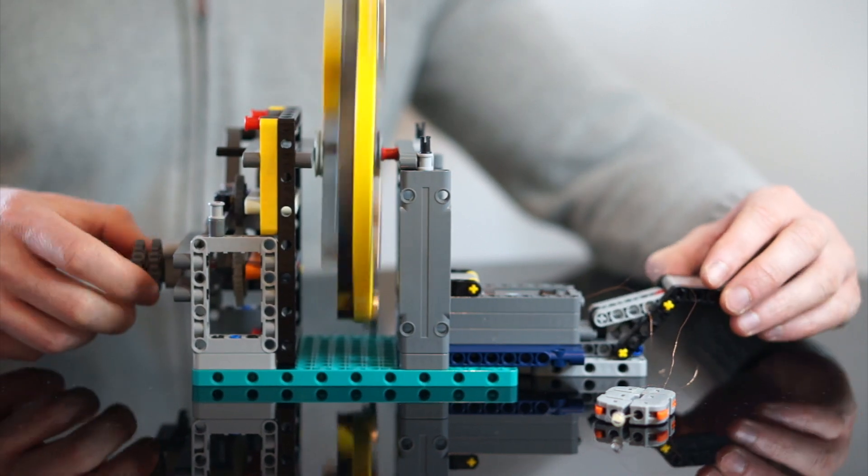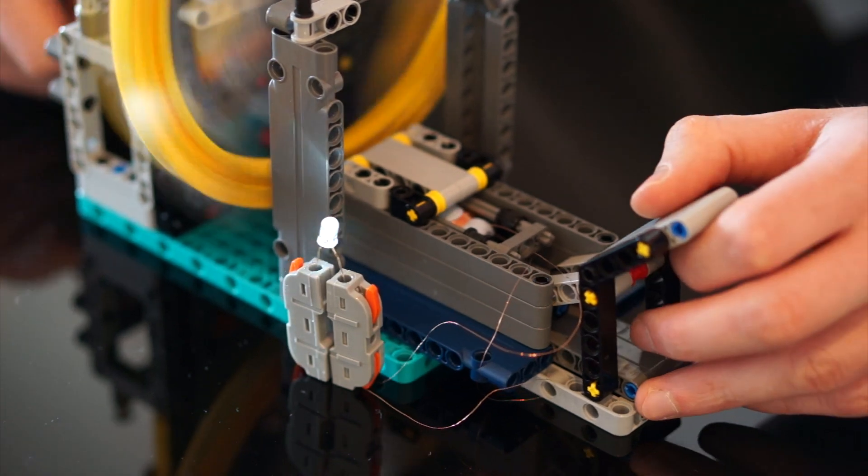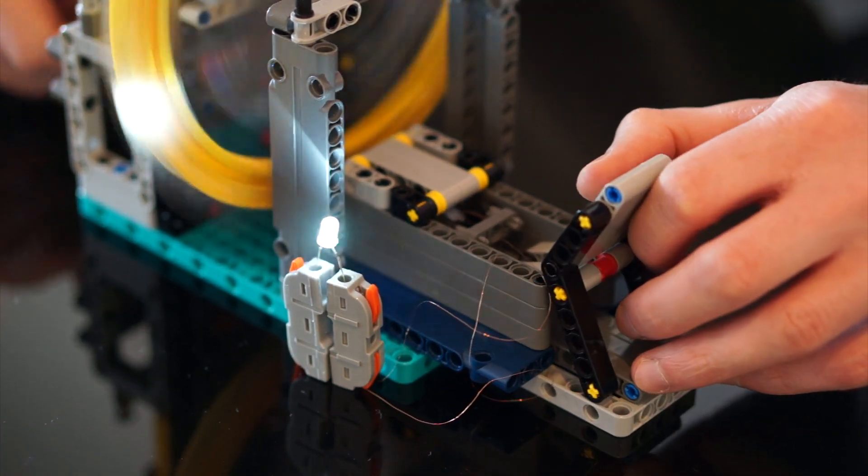This is a simplified axial flux generator with only a single copper coil, and this is it lighting up a small LED array.